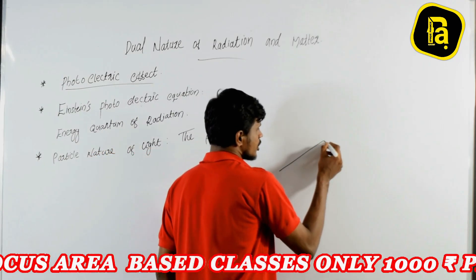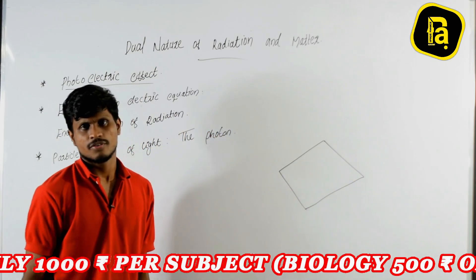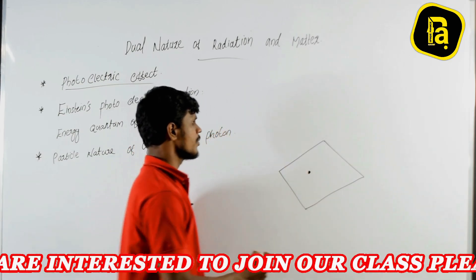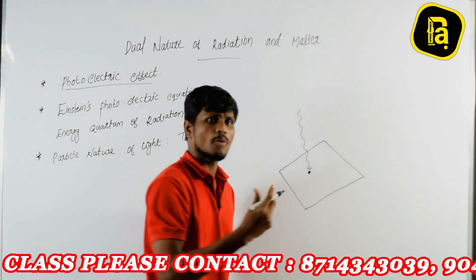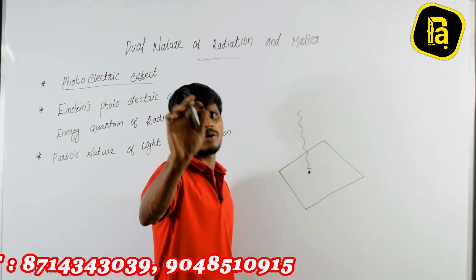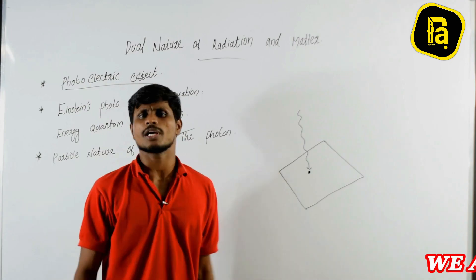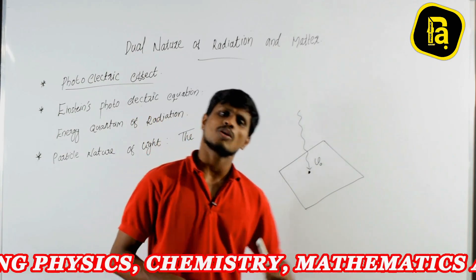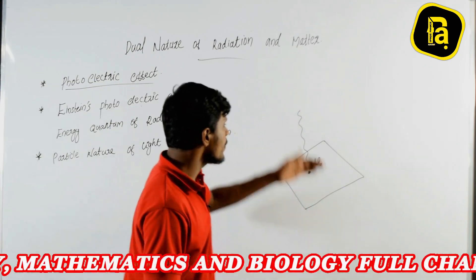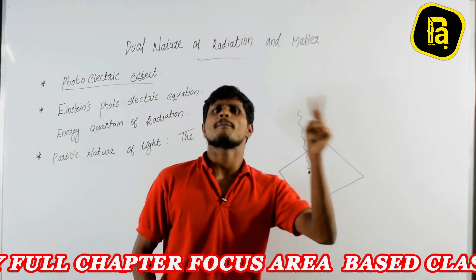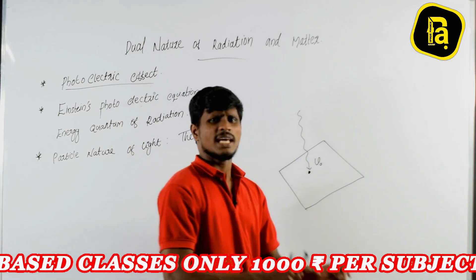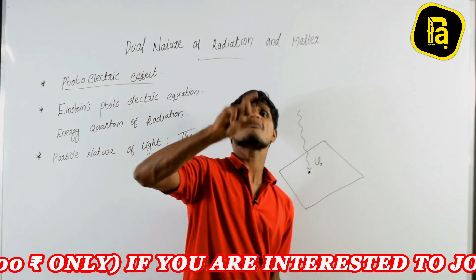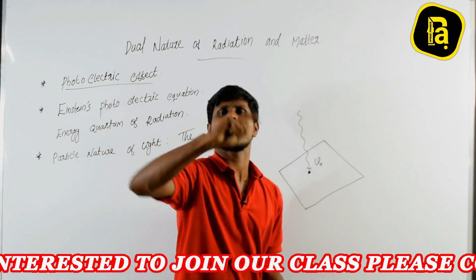I am saying threshold frequency. What is threshold frequency? The minimum amount of energy required to emit an electron from a metal surface is the work function. The minimum frequency required to emit an electron from a metal surface is called the threshold frequency.